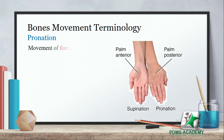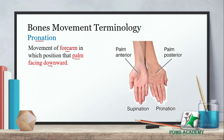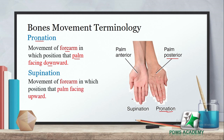Pronation: the movement of the forearm in which the palm faces downward is called pronation — palm posterior is called pronation۔ اس کا opposite supination ہے: supination is the movement of the forearm in which the palm faces upward۔ Palm anterior is called supination and palm posterior is called pronation۔ Pronation اور supination basically forearm movements ہیں۔